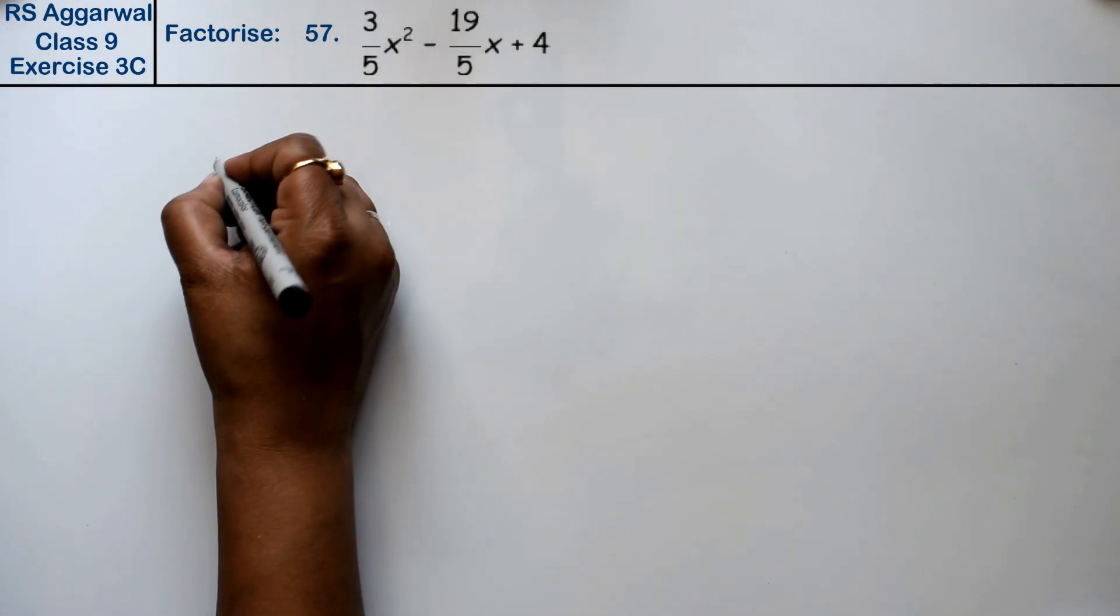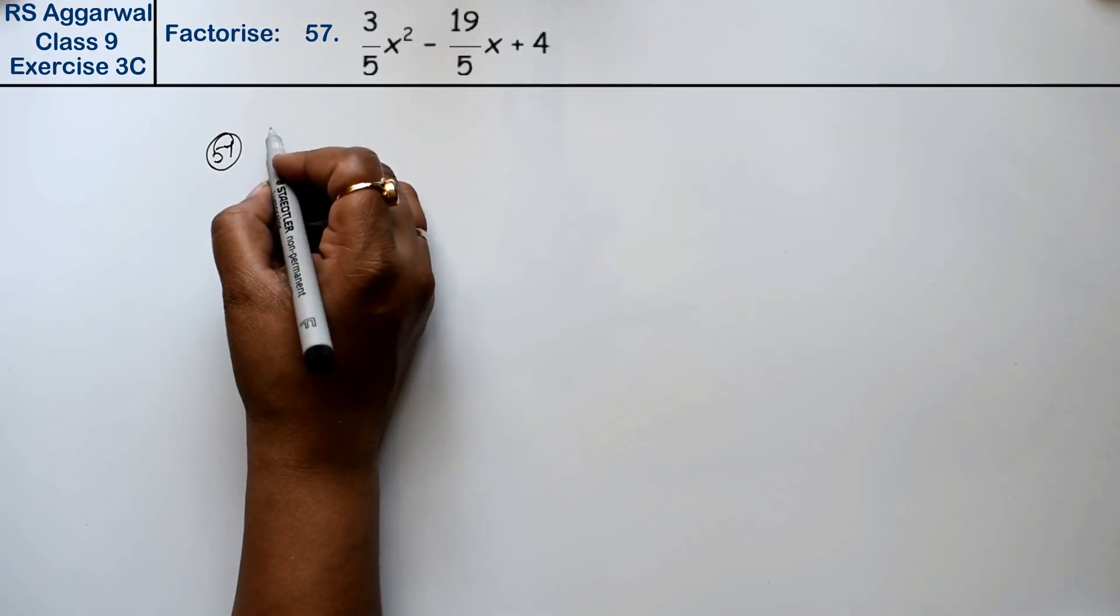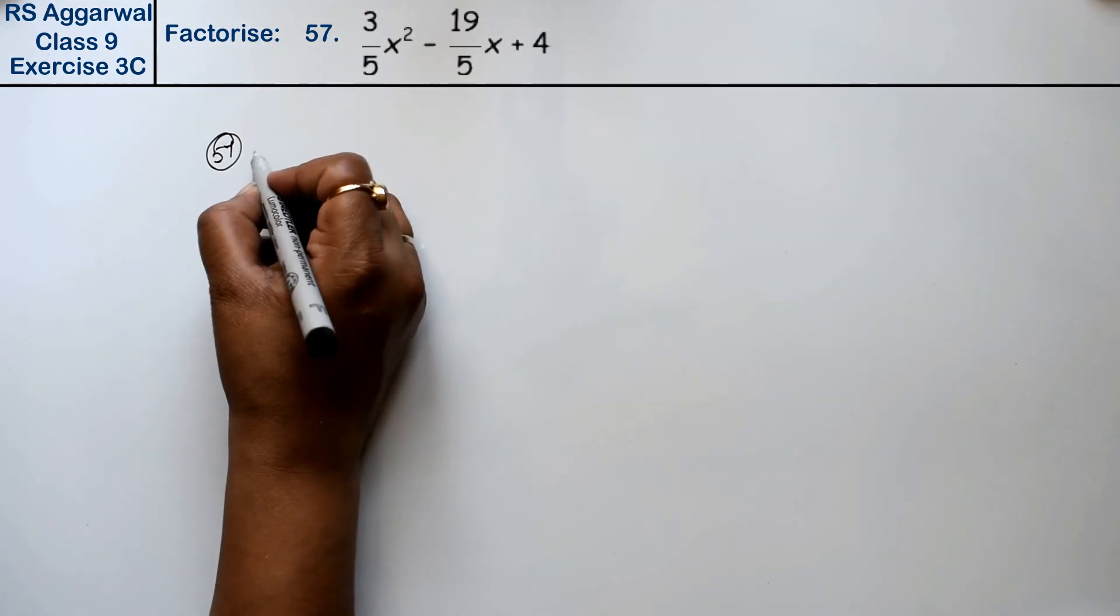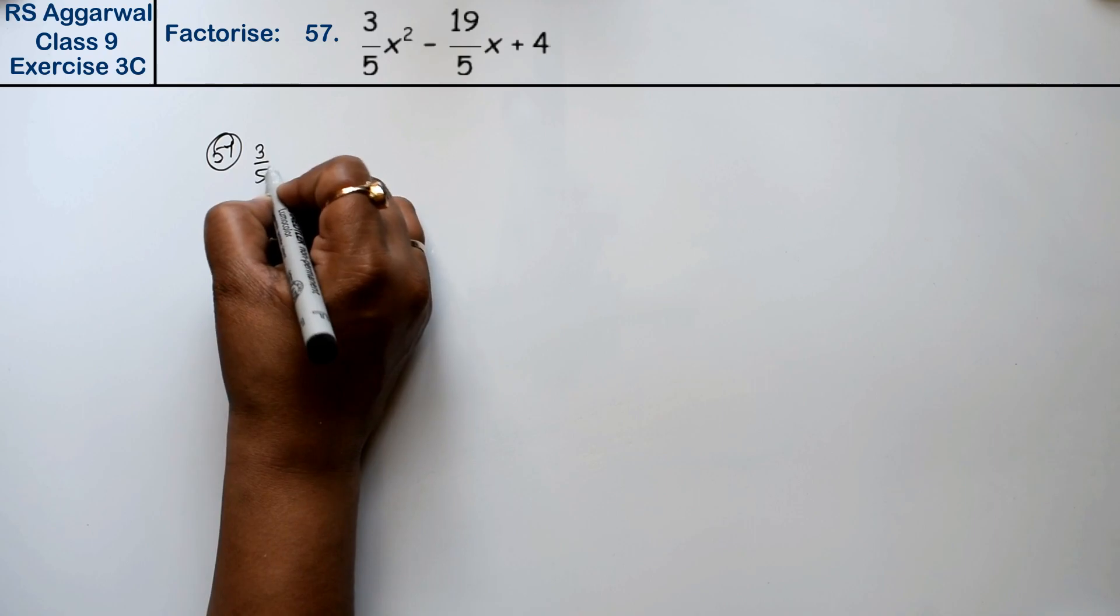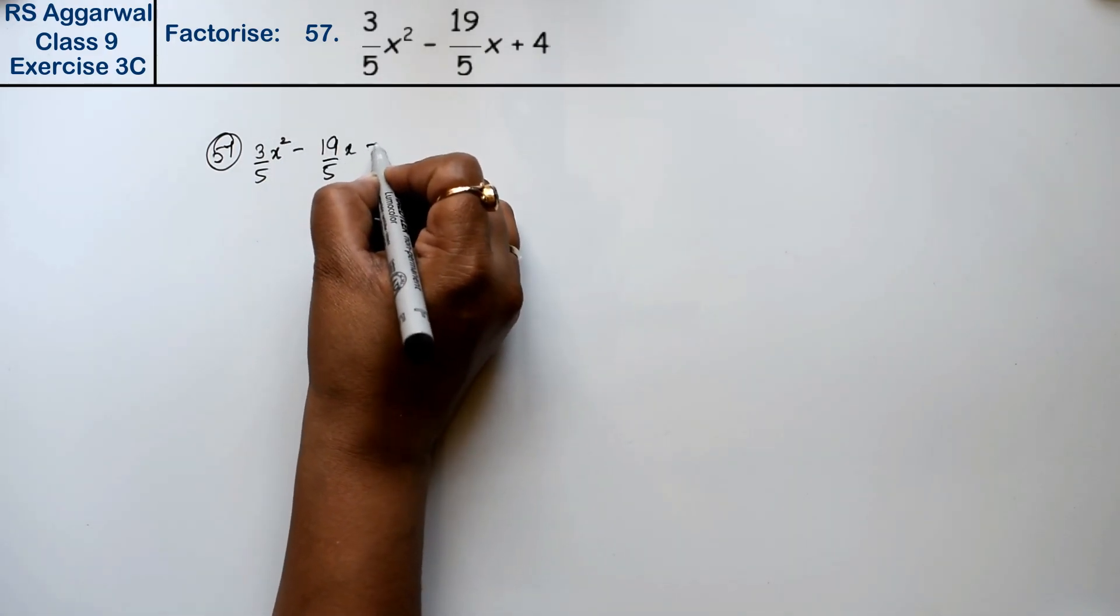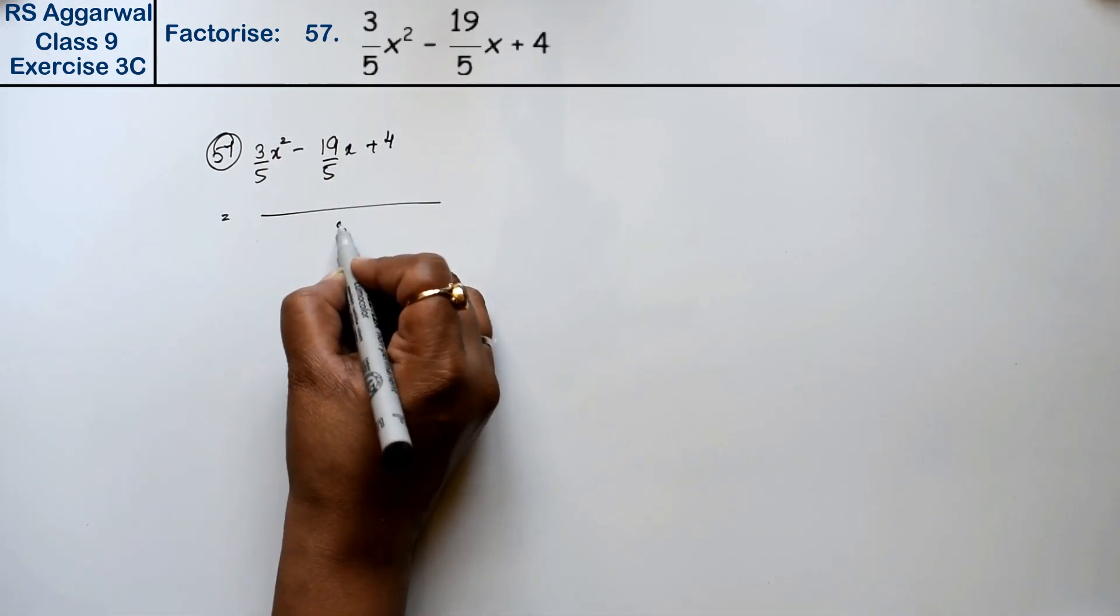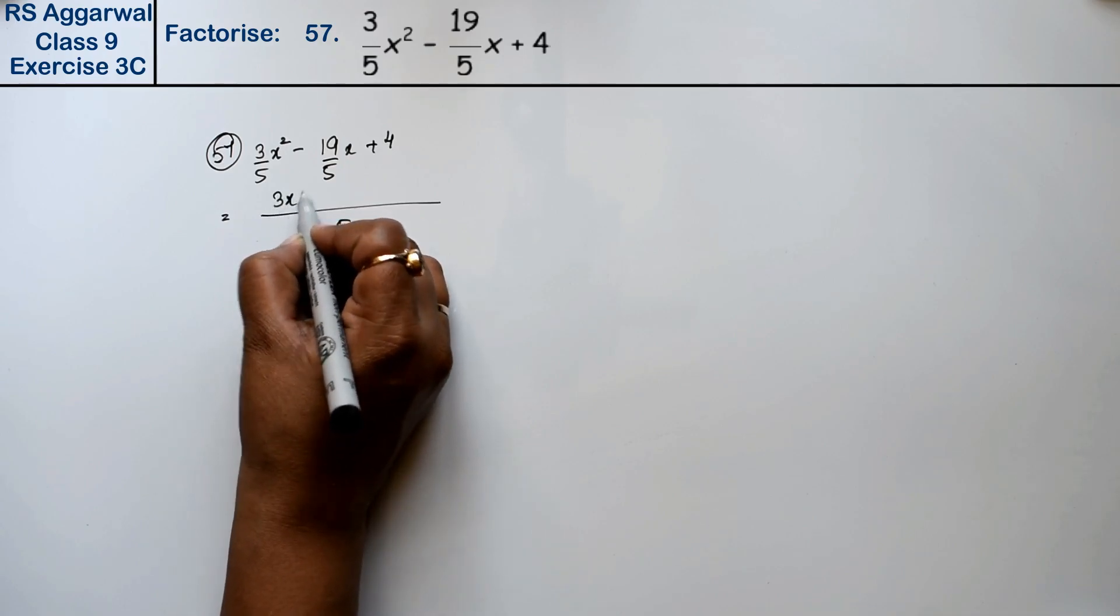Let's do question number 57 of exercise 3C, that is factorization of polynomial. Question number 57 is 3/5 x² minus 19/5 x plus 4. Friends, taking LCM 5, we get 3x².